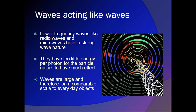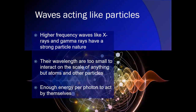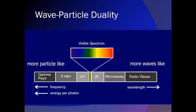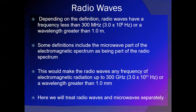Radio waves and microwaves have a very strong wave nature. We don't really talk about their particle nature or think of them as photons. Radio waves are at the very end of the spectrum, with a frequency of 300 megahertz or lower — that's 300 million oscillations per second. In the scheme of things, that's a very low frequency, meaning their wavelength is greater than a meter.